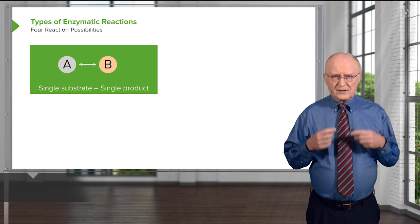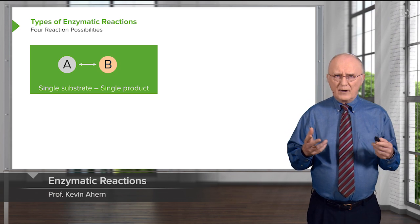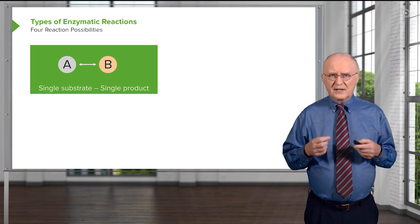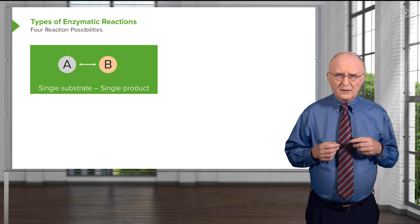Now, when we think about enzymatic reactions, there's actually a series of different ways that molecules can react in interacting with an enzyme. We can have, for example, a reaction that's a single substrate reaction and a single product. A is converted into B.